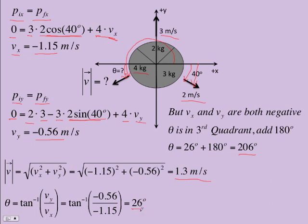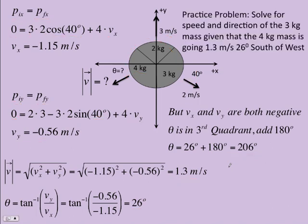If you typed in 26 degrees, say, to your WebAssign problem, you would get it wrong. 206 counterclockwise from the plus x axis. If you want to practice this one, what if instead they told you that this guy was 1.3 and this was 26 degrees here south of west? What would be the speed and direction of the 3 kilogram piece? So you know the answer - see if you can work through starting from the beginning and come up with that one.